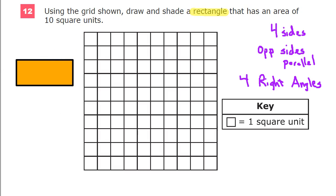I just need a rectangle that has an area of 10 square units, which is to say I want 10 of these shaded in. And the reason is because each one of these is one square unit. It told me so. You don't have a ton of options here, but you do have some.